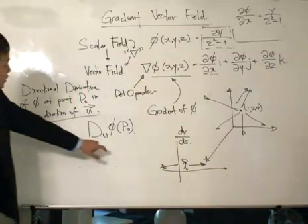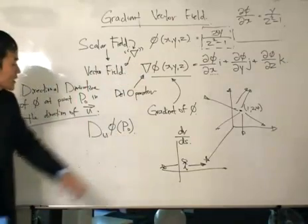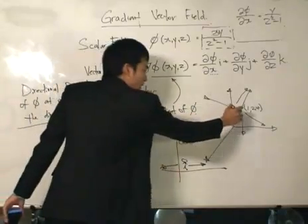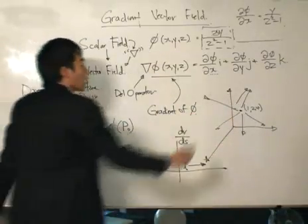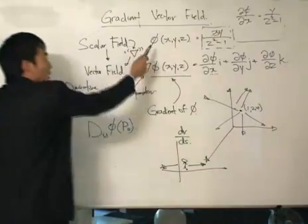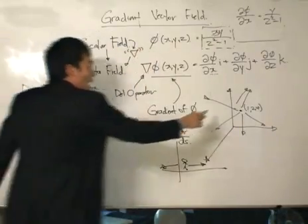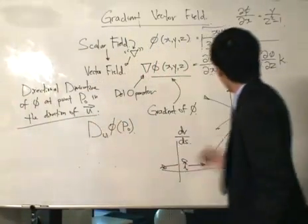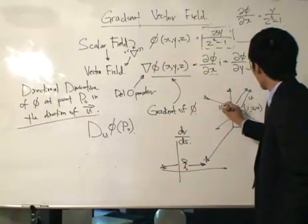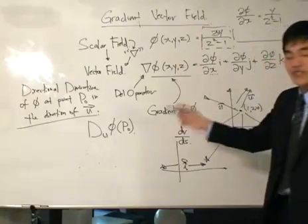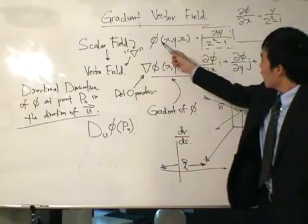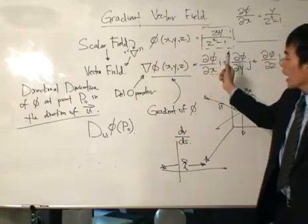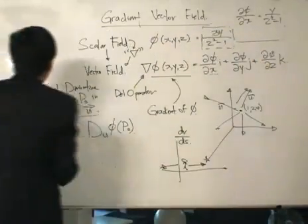And then we also talk about the directional derivative of phi at point naught. So that means that I got a point in the three-dimensional space. I got the resultant value from the function, from the scalar field of phi, and depending on which direction I travel, which direction of u I travel, my rates of change of phi of the scalar field is going to be different. And that is what the directional derivative means.